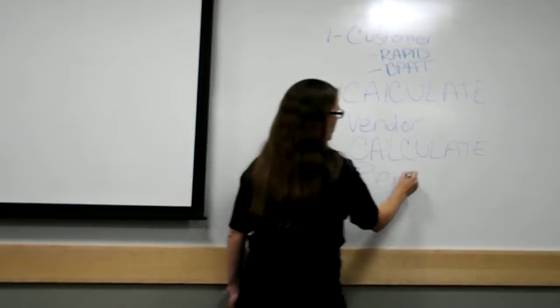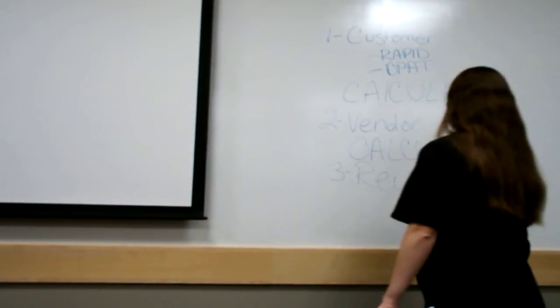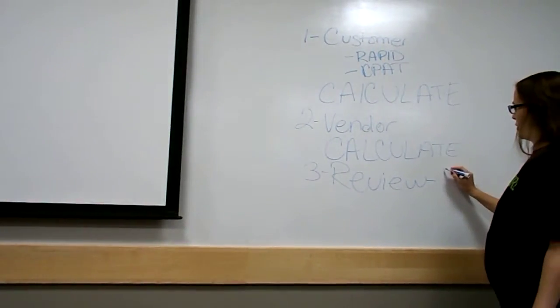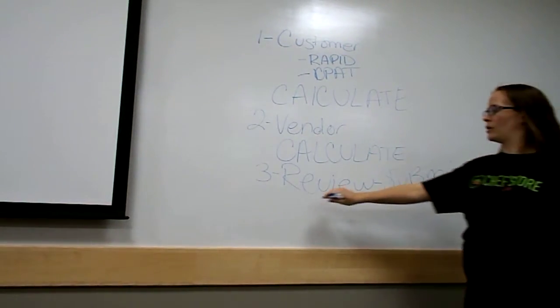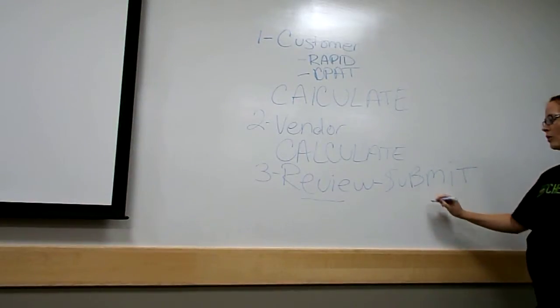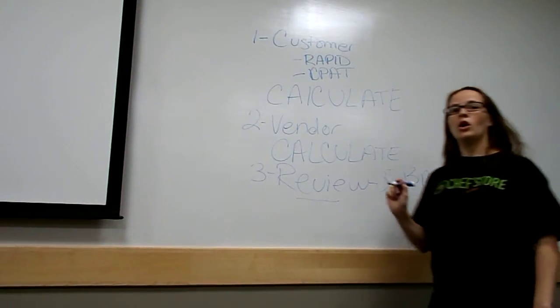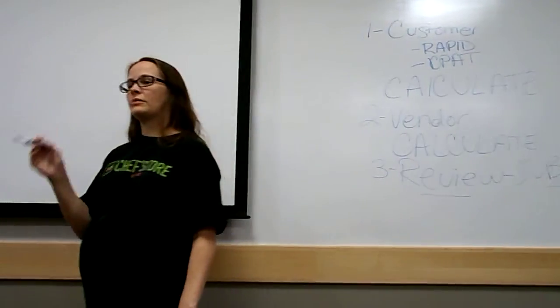After we have all calculations done, it either goes into review or is automatically submitted. We submit the audit to Alan, our credit and rebill expert, if we're not comfortable with it. If we haven't done this audit type many times—like part case charges, per pound, catch weight items—